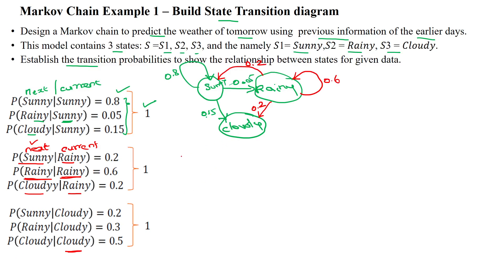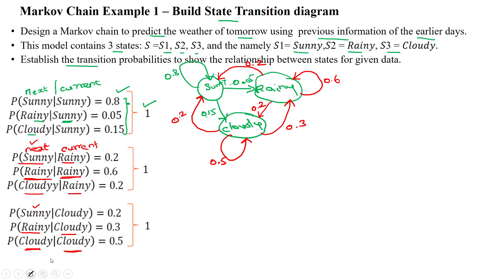The third current state is cloudy. The probability of sunny given cloudy — that is, from cloudy the next state will be sunny — is 0.2. The probability of rainy given cloudy, where the current state is cloudy and the next state will be rainy, is 0.3.